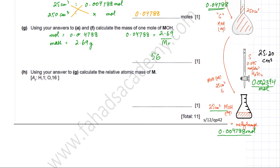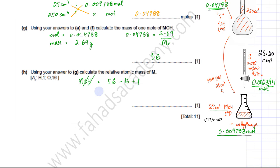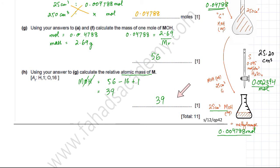Finally, calculate the relative atomic mass of M. The MR of MOH is 56. Removing oxygen (16) and hydrogen (1): AR of M = 56 - 16 - 1 = 39. According to the periodic table, element with atomic mass 39 is potassium, symbol K. So M is potassium, and that is the answer to this titration question.